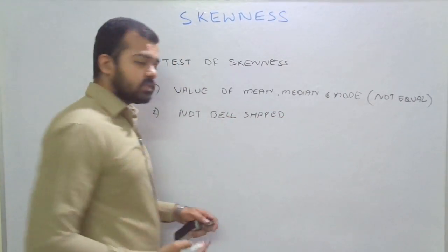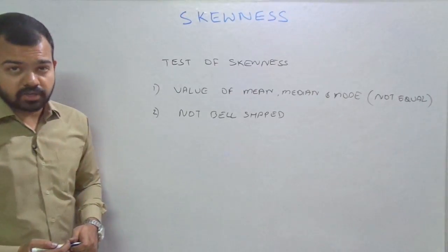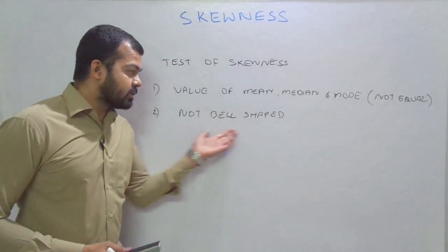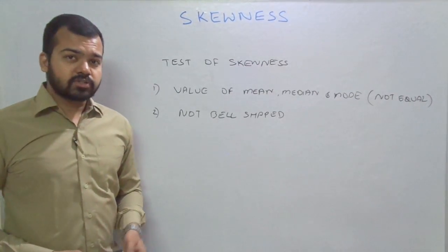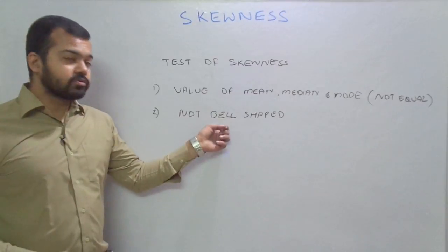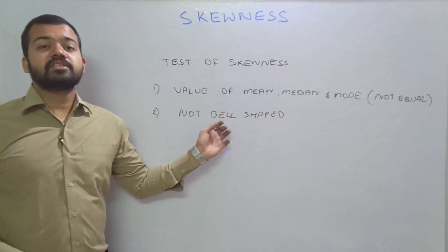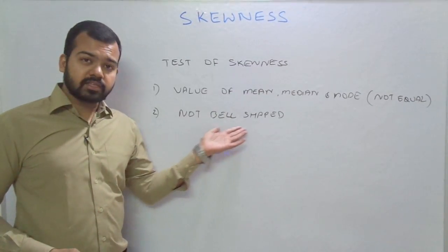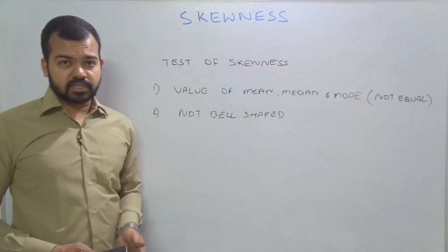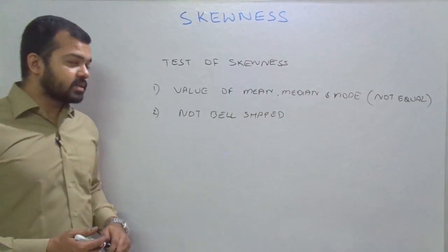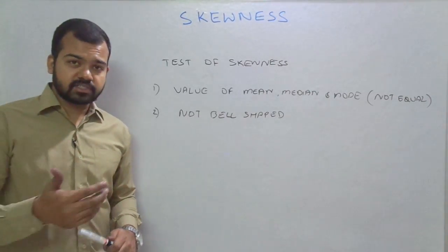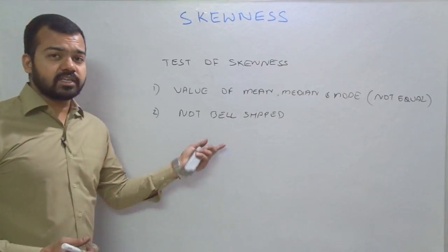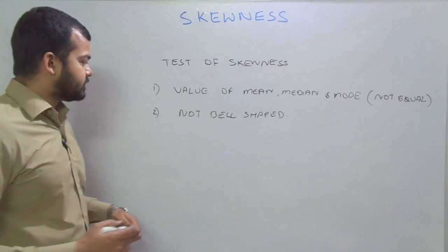The second test: whenever we plot the series of data on a graph, we will not get a perfect bell-shaped curve. This is also a sign that the series is skewed. Whenever we do not get the bell-shaped graphical representation of that series, we can conclude that the series is skewed.